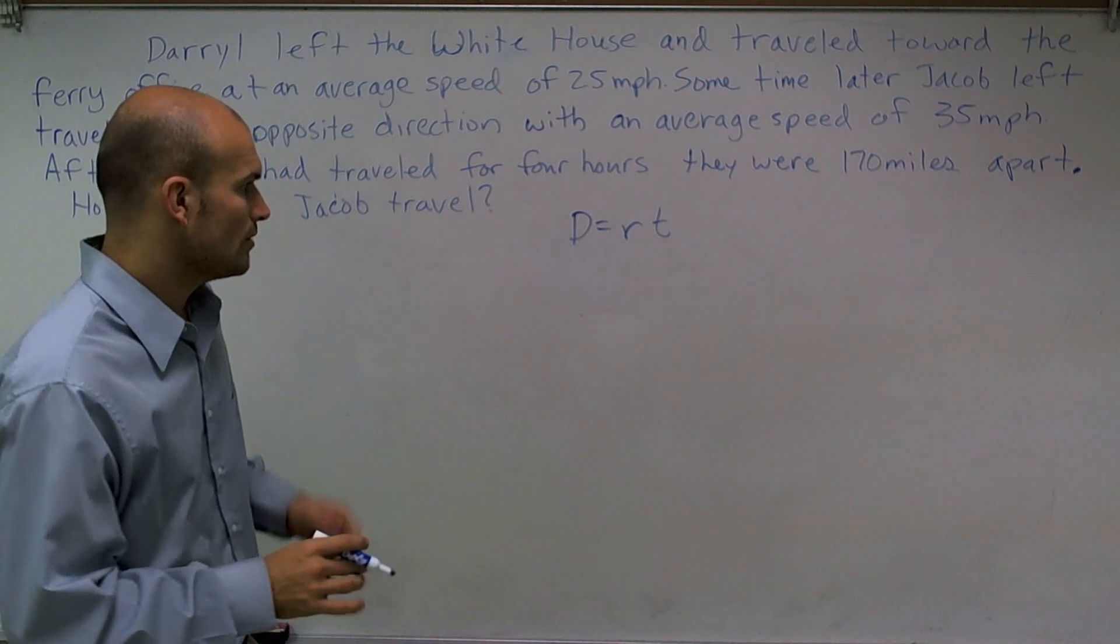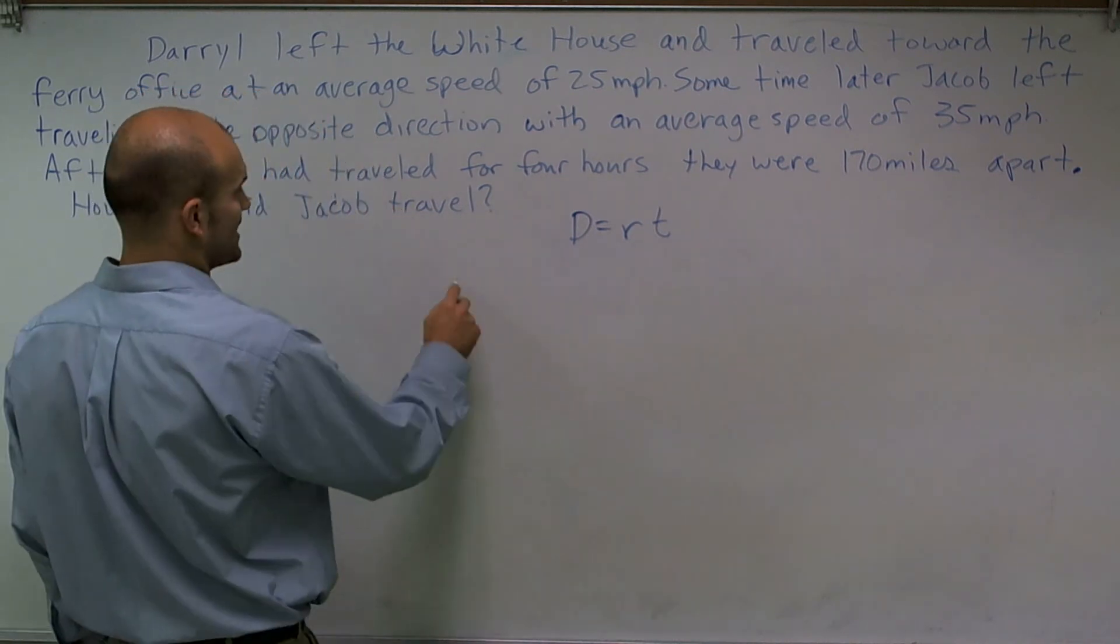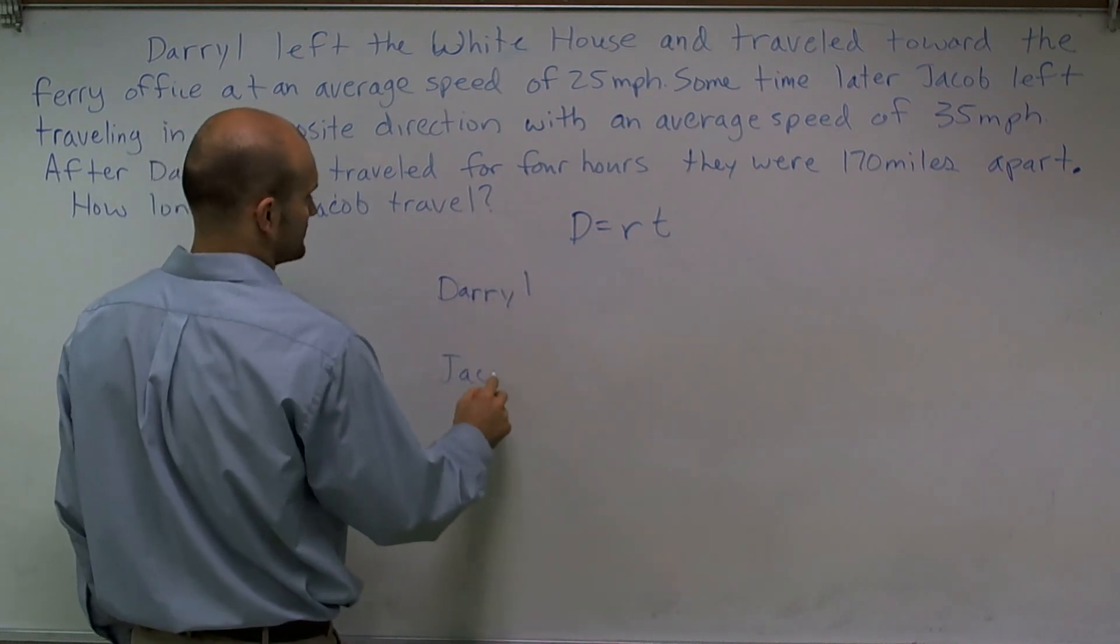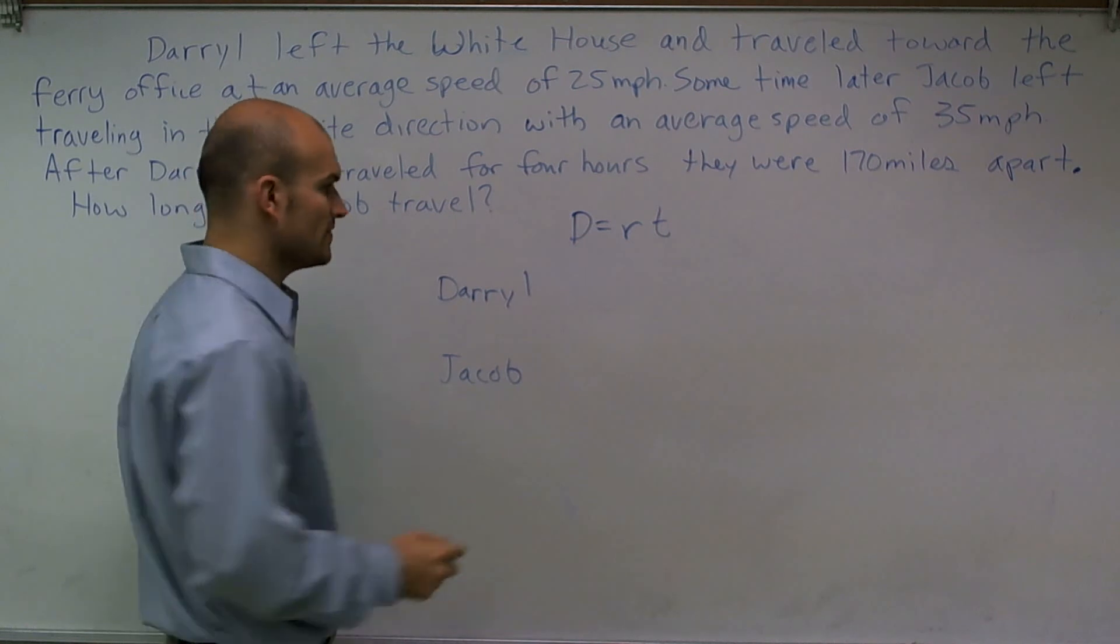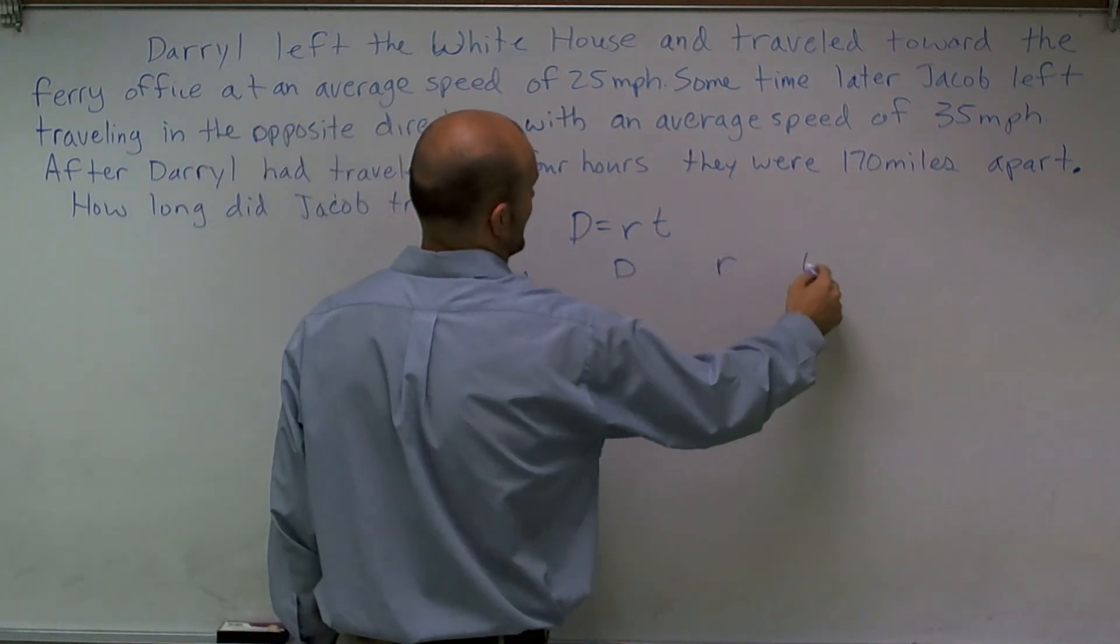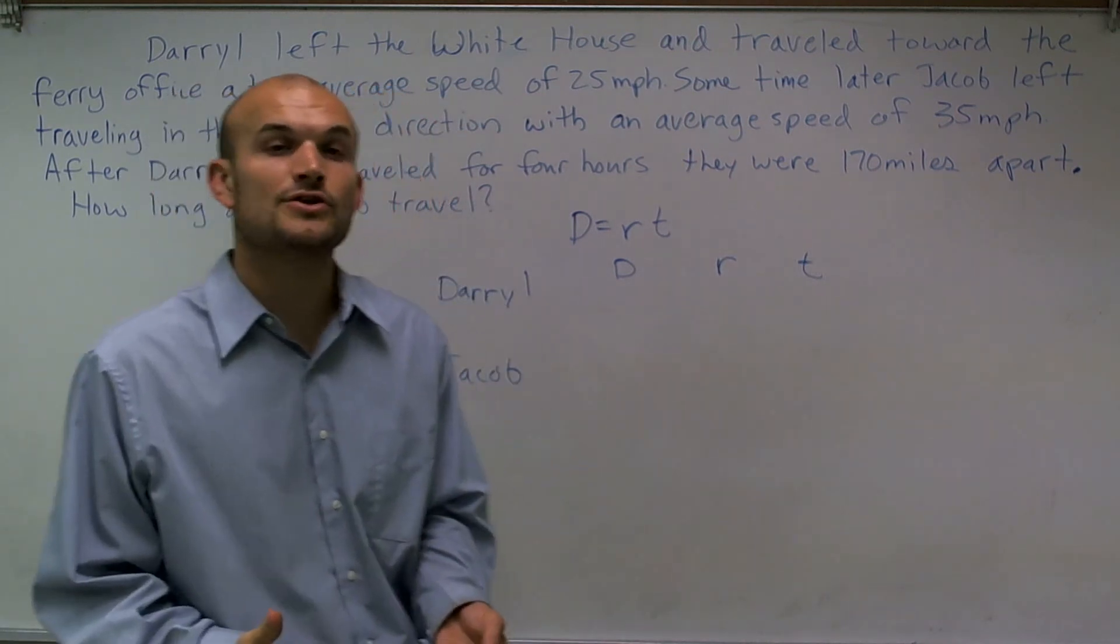So what we're going to do is set up two separate equations here. I'm going to set up Daryl and Jacob. For both of them, I'm going to set up a distance, a rate, and a time. I'm going to put in the information that we know for each one of them.